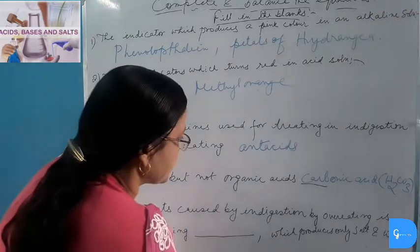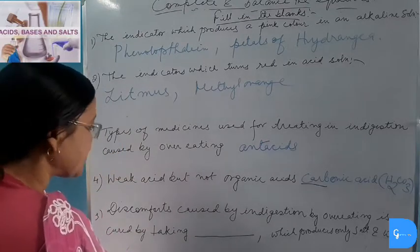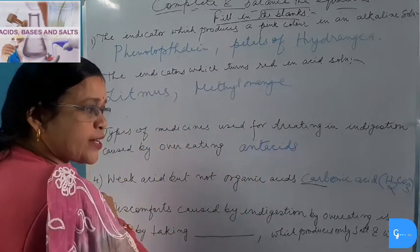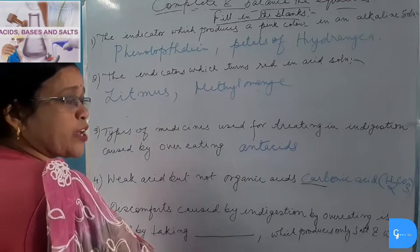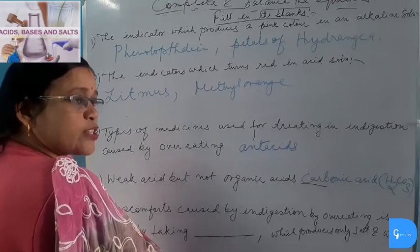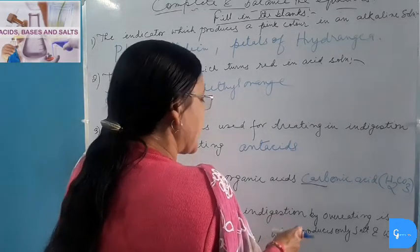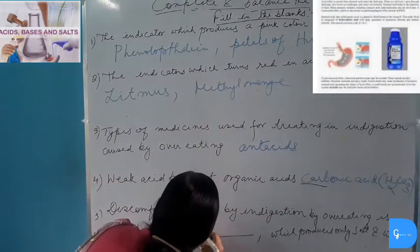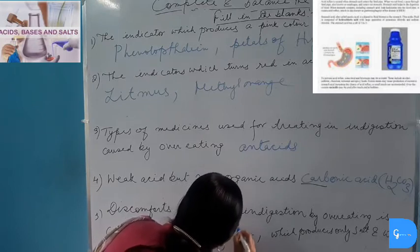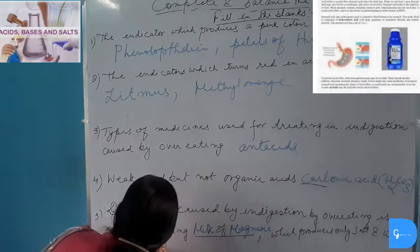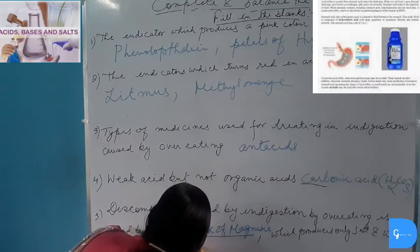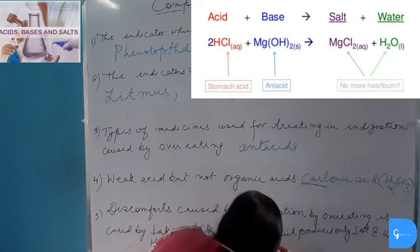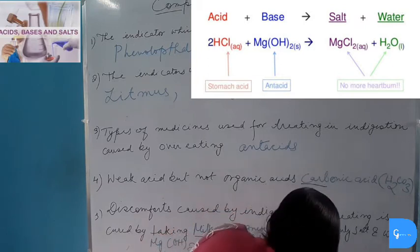Discomfort caused by indigestion or overeating is cured by taking a substance which produces only salt and water — not carbon dioxide. So it must not be baking soda, because baking soda (NaHCO₃) liberates CO₂. It must be Milk of Magnesia. The formula of Milk of Magnesia is Magnesium Hydroxide, which reacts with excess Hydrochloric Acid produced in the stomach to form Magnesium Chloride (salt) plus Water.